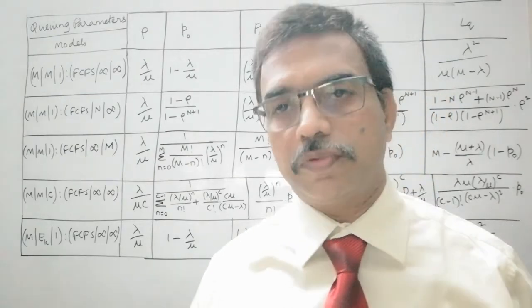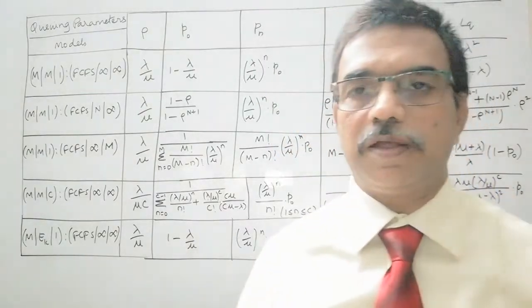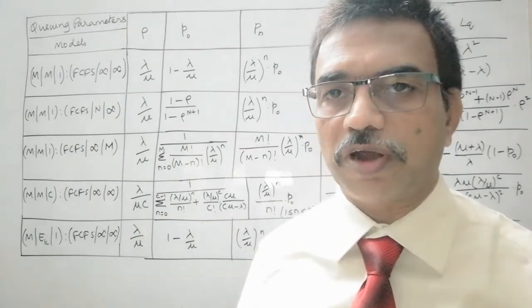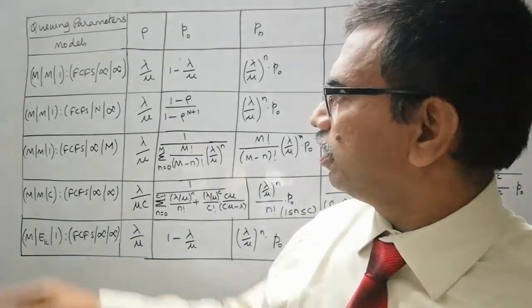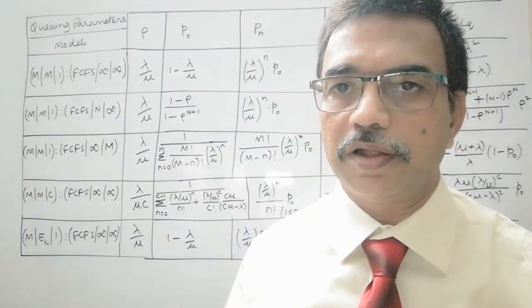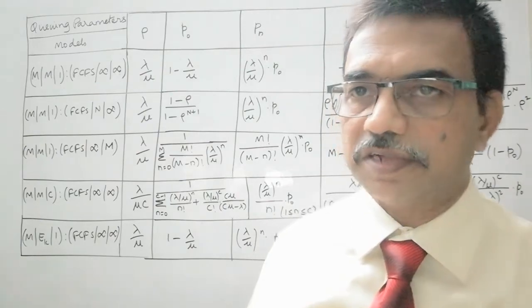In some other video, I have explained the Kendall's notation for different queuing models in this form, that is a/b/c:d/e/f.